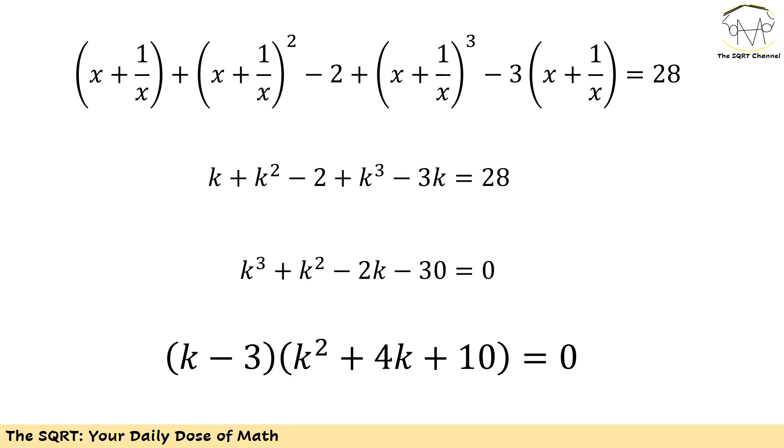Now I'm going to factor out k minus 3, and then I will have k squared plus 4k plus 10 equals to 0. The second parenthesis doesn't have any solution, so k is going to be 3.